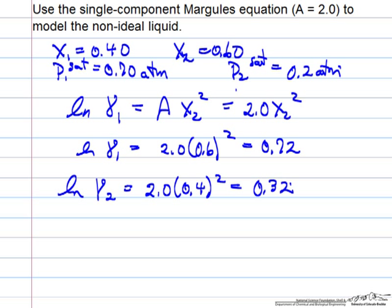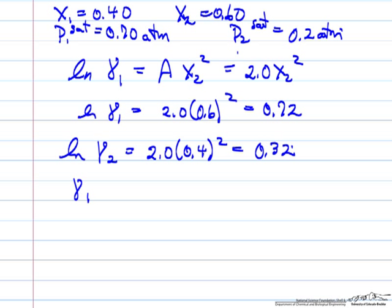And likewise for the log of gamma 2, the same kind of calculation. This means if we take the exponential of these equations, gamma 1 is 2.05 and gamma 2 is 1.38.